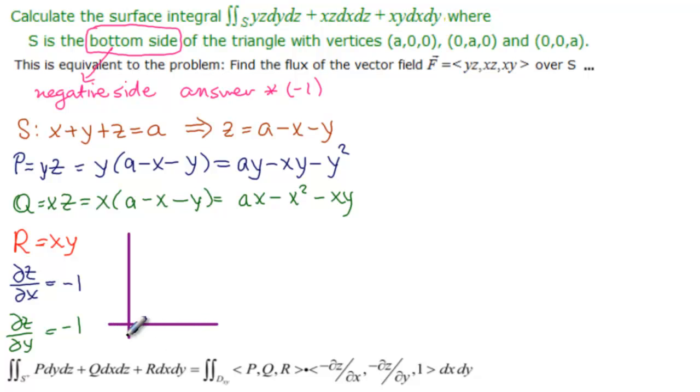And now we need to find dxy, which is the projection of s onto the xy plane. So just as we did before on a different problem, we take these vertices and make z equal to 0. So (a,0), (0,a), and (0,0). We're looking at this triangle down here on the xy plane. So this is dxy. And we need to know the equation of that line is y equal to minus x plus a. So we're going to be going y from 0 to a minus x, and x from 0 to a.